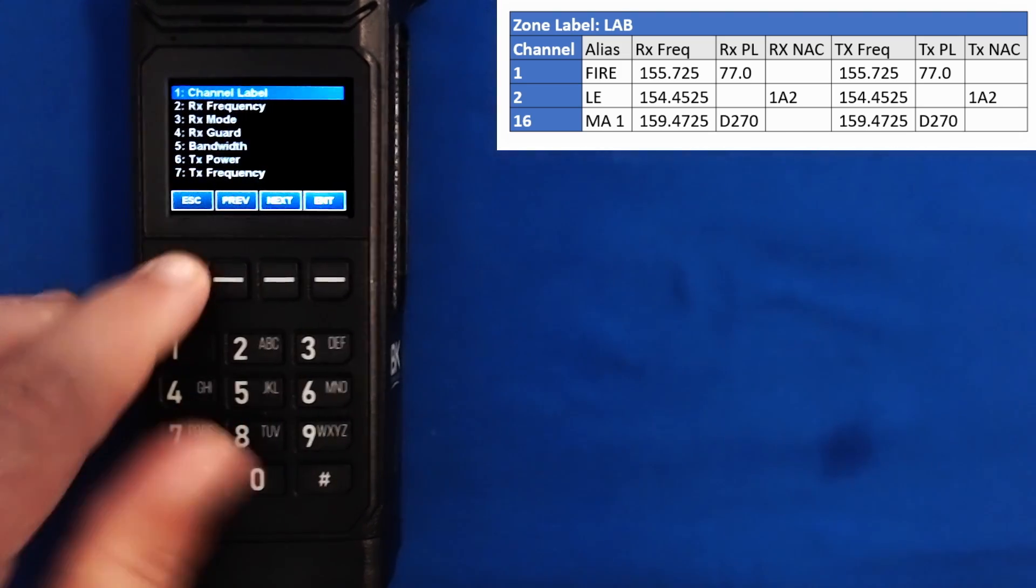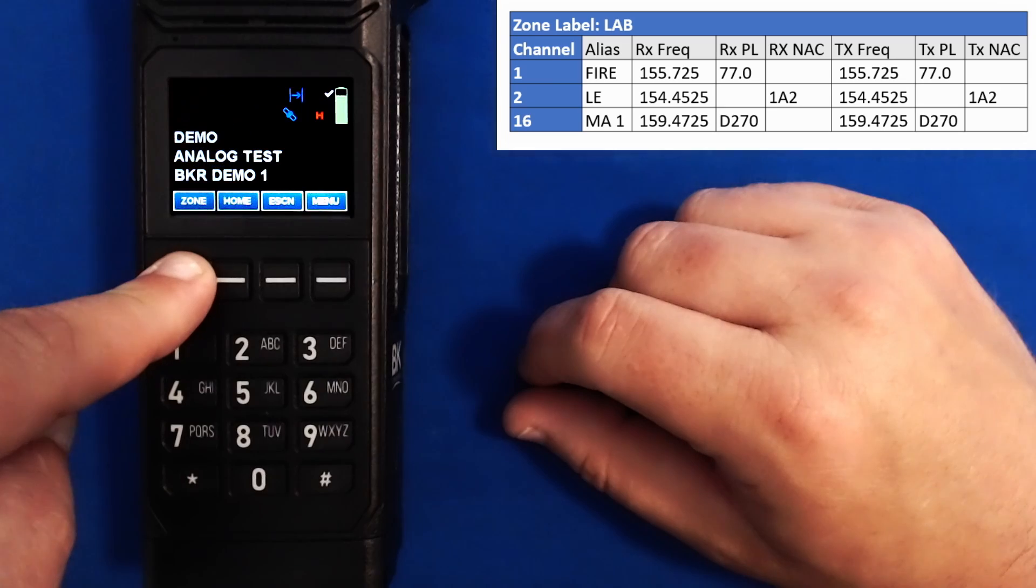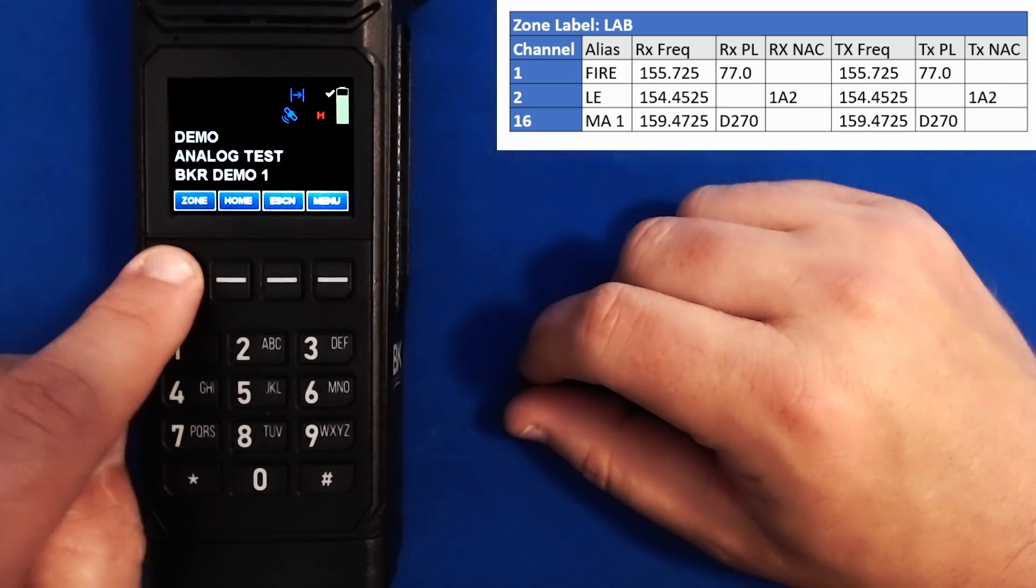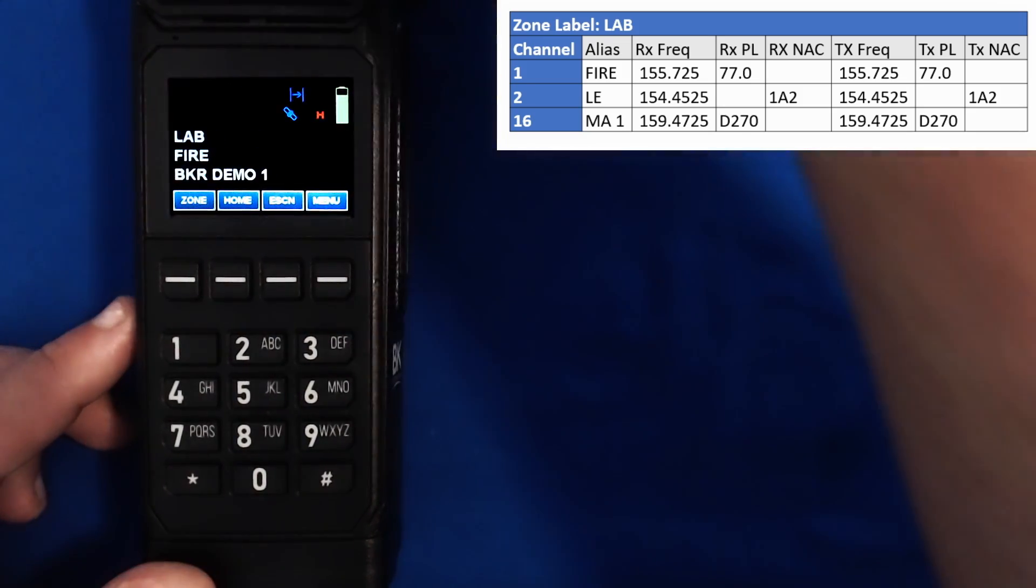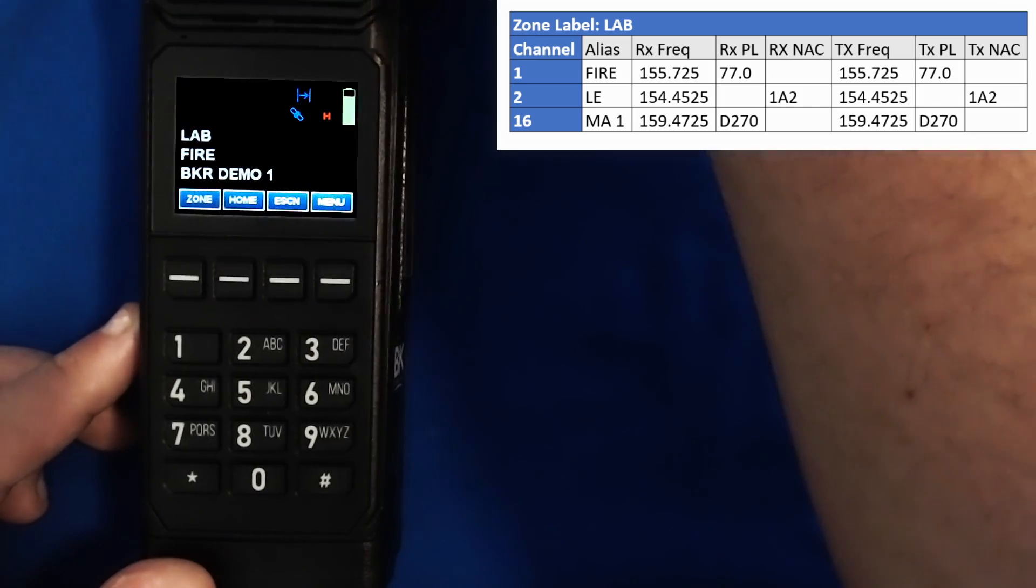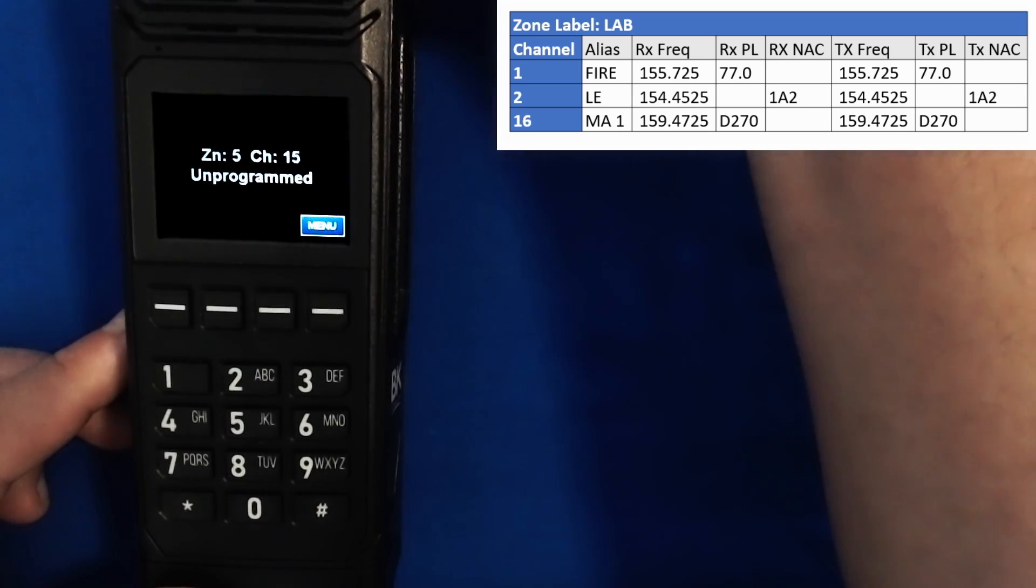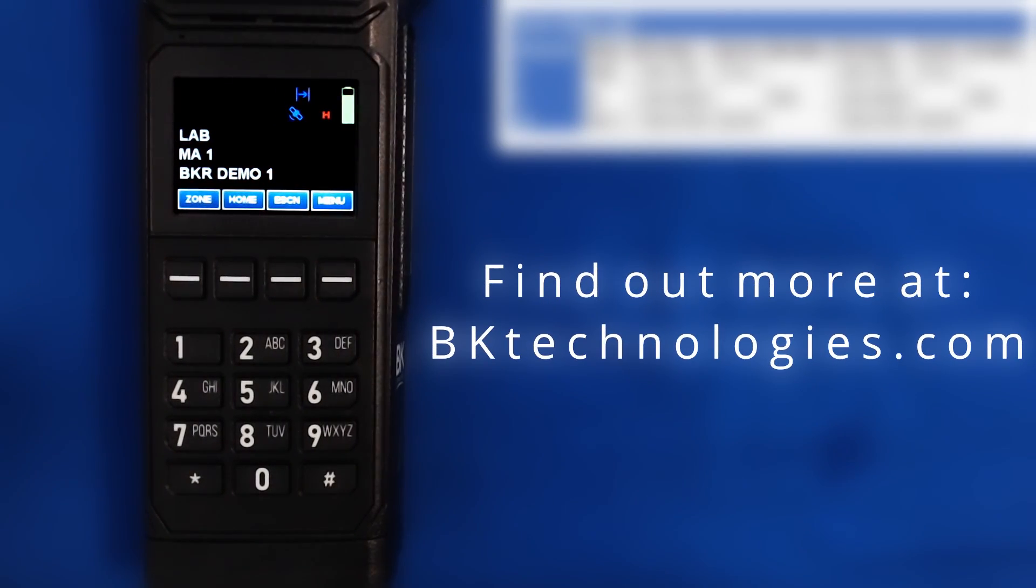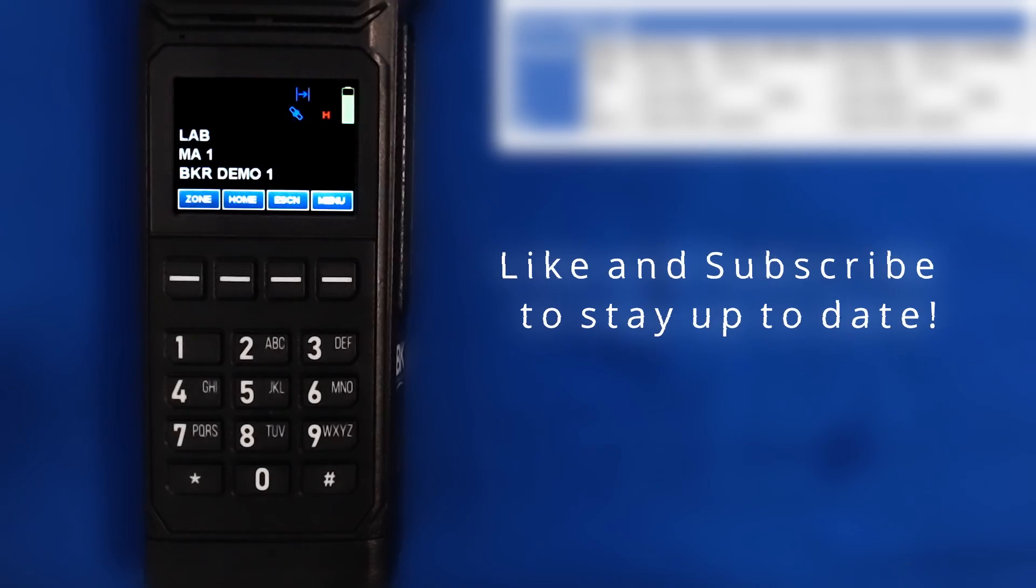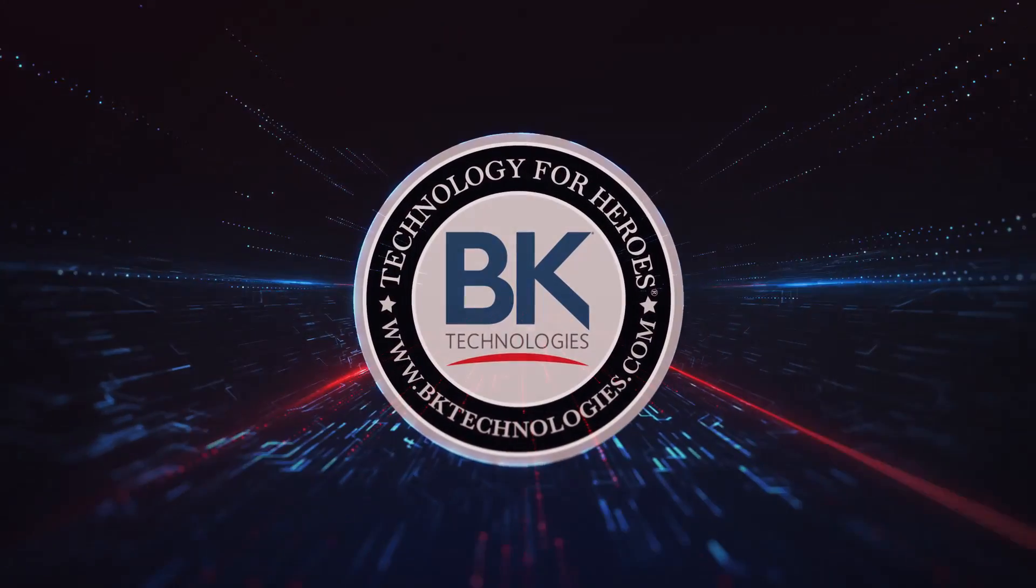So we can either hit escape and go out of the menus like such, or we can press and hold escape and take us all the way out to the front. Here I can press my zone select button and I can scroll down to the zone I just added. And here you see the fire channel that I added, the LE channel that I added, and there's the MA on position 16. This concludes our keypad programming for the BKR5000, KNG2, and KNG. I hope you subscribe to our YouTube channel so that you can be notified of more great content like this video you've just watched.